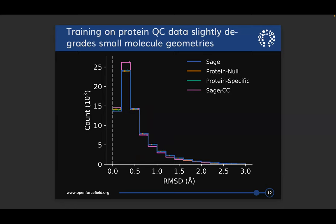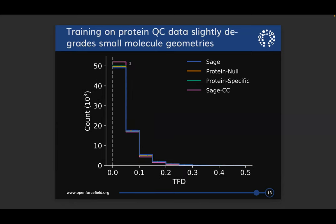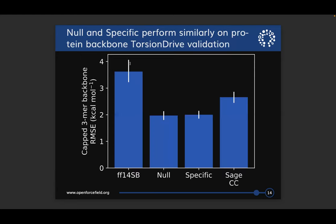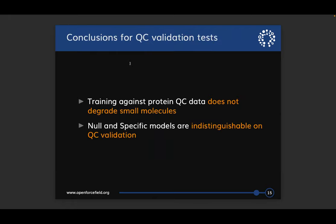Showing the same kind of histogram for geometric targets — RMSD of low energy conformers — we see a slight degradation in geometries compared to the starting point, and a similar story for torsion fingerprint deviations looking at internal coordinates. If we're worried about that geometric distortion, we can tune it by adjusting the relative weights between protein data and small molecule data in future optimizations. For protein-specific validation, torsion drives scanning phi and psi in two dimensions for capped 3-mers not used in training show a root mean square error of about 2 kcal/mol for both null and specific models, with no significant difference between them. QC data does not discriminate between the null and specific models that have different numbers of parameters.